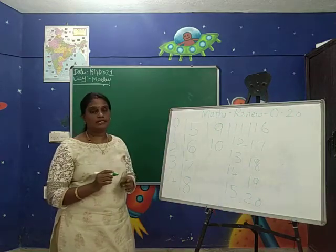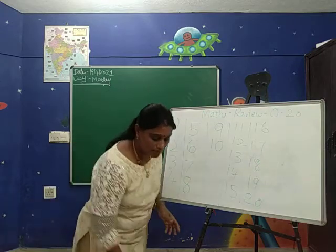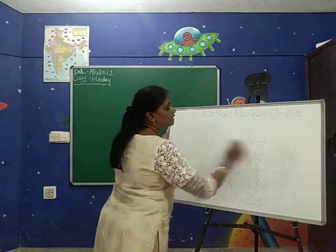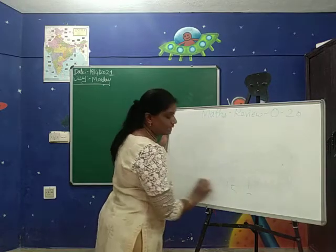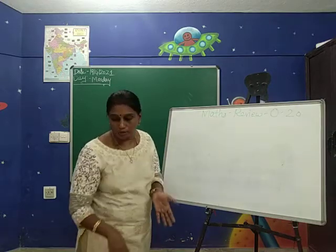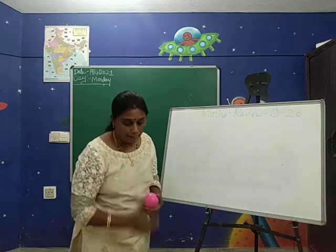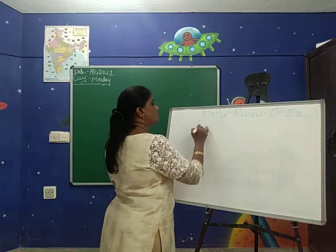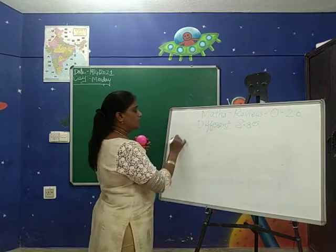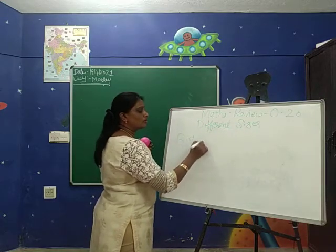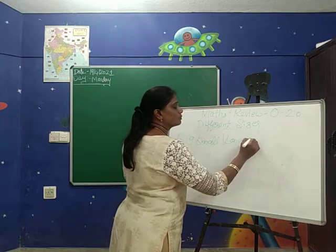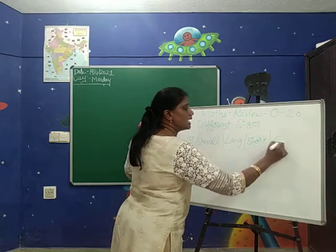We have learned the tracing of numbers. Next, we will revise the different sizes. What are the sizes we have learned? That is big and small, long and short, and same size. I will show you examples for big and small — these are different sizes we have learned.